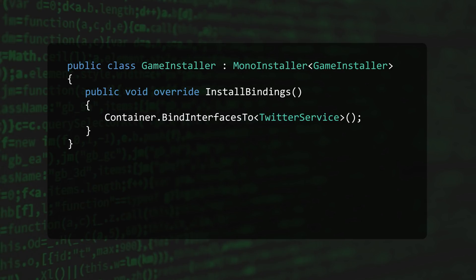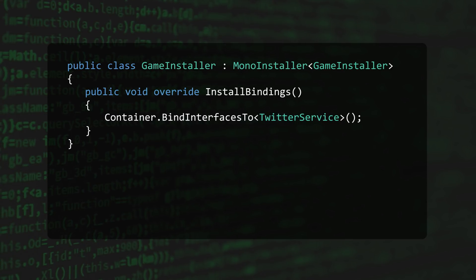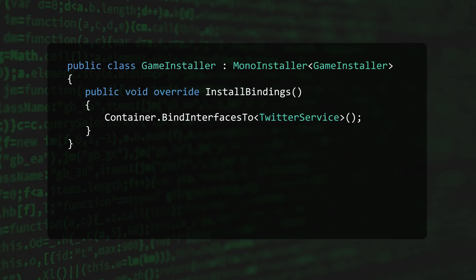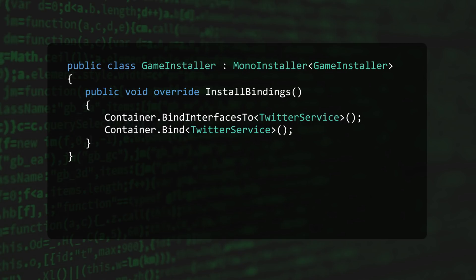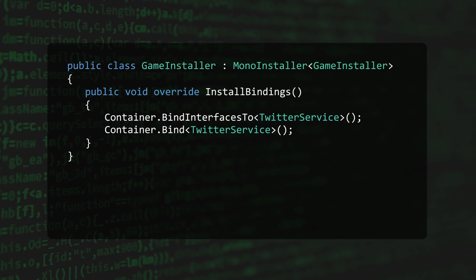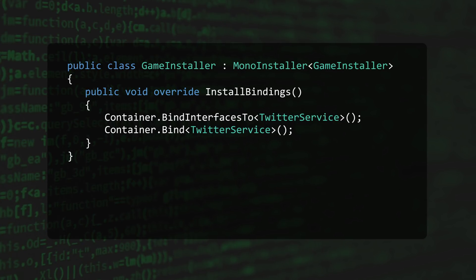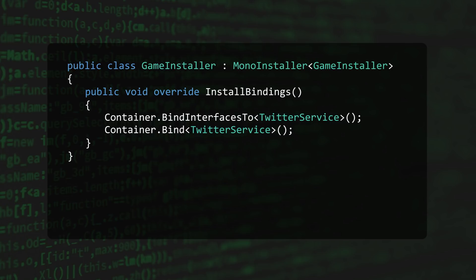Much better. Now, the whole point of this service is that other classes should be able to reference it, so let's add a binding for the class itself. But wouldn't it be great if we could do all of that in one line? Well, again, luckily for us, Zenject comes with another helper method just for that purpose.